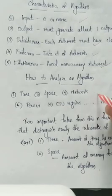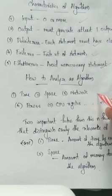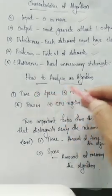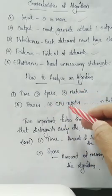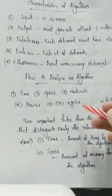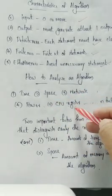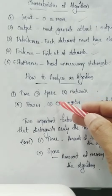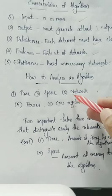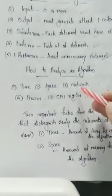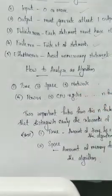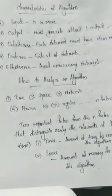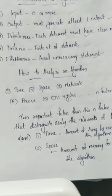We have to analyze the algorithm. The factors for analysis include time, space, network, power, and CPU registers. We also analyze memory, bandwidth, and network usage. Another factor is power consumption.